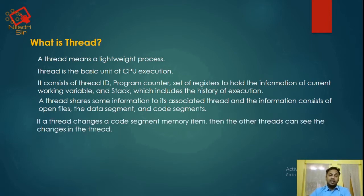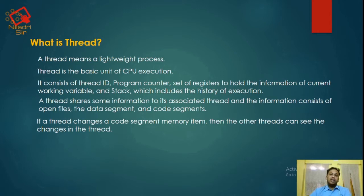If a thread changes a code segment memory item, then the other threads can see the changes. Suppose there are 4 threads working in a process and there is a change in a single thread — you can see those changes in the other 3 threads as well.